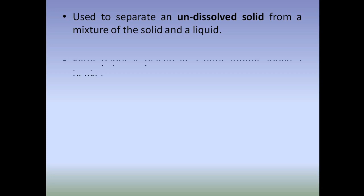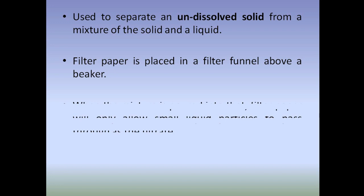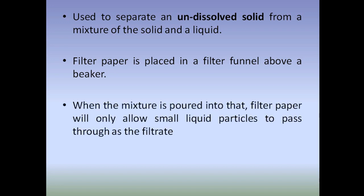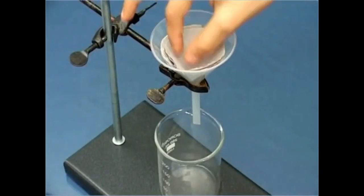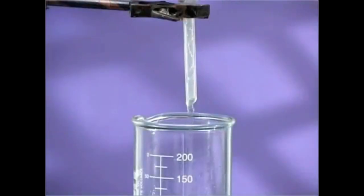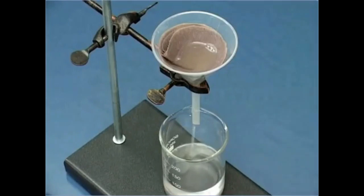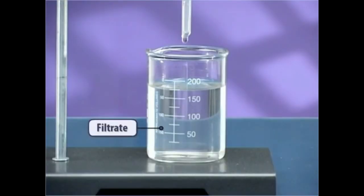The next method is filtration. Filtration is used to separate an undissolved solid from a mixture of solid and liquid. For example, at home we filter tea dust using a strainer. In the lab, filter paper is placed in a filter funnel above a beaker. When the mixture is poured in, the filter paper allows only small liquid particles to pass through as the filtrate. Solid particles are too large to pass through the filter paper, so they stay behind as a residue. The liquid collected in the beaker is called the filtrate.